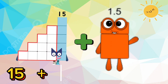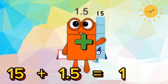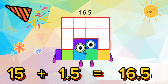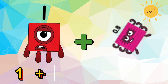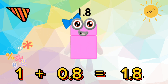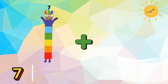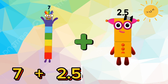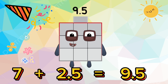15 plus 1.5 is equals to 16.5. 1 plus 0.8 is equals to 1.8. 7 plus 2.5 is equals to 9.5.